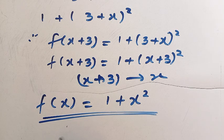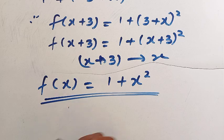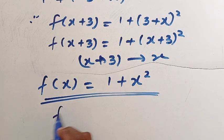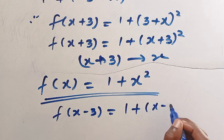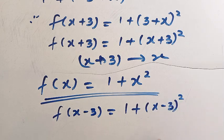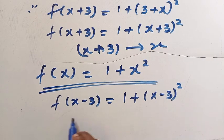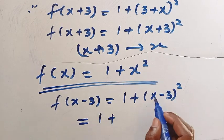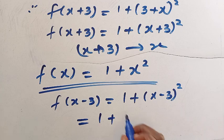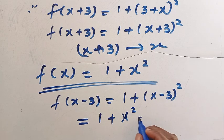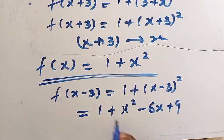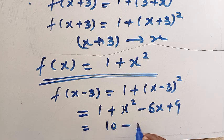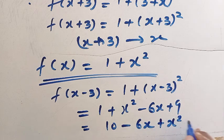That gives f(x), but what about f(x minus 3)? It's simple — just replace x with x minus 3. So f(x minus 3) equals 1 plus (x minus 3) raised to the power of 2. By expanding (x minus 3) squared we have x squared minus 6x plus 9, and adding 1 plus 9 together we get f(x minus 3) equals 10 minus 6x plus x squared.